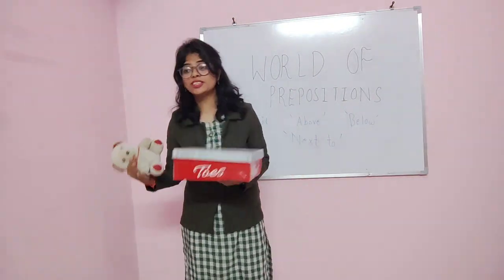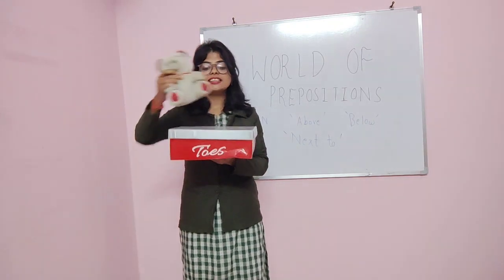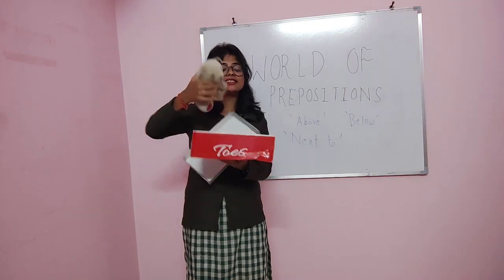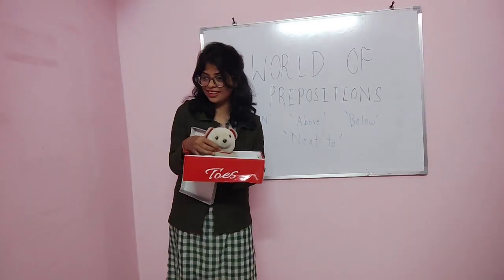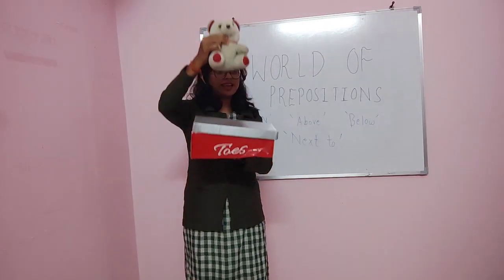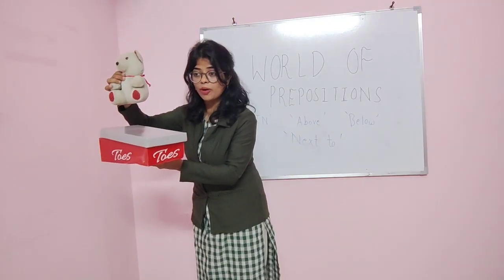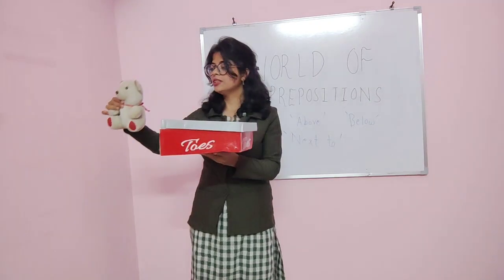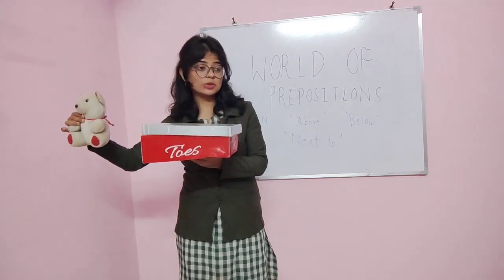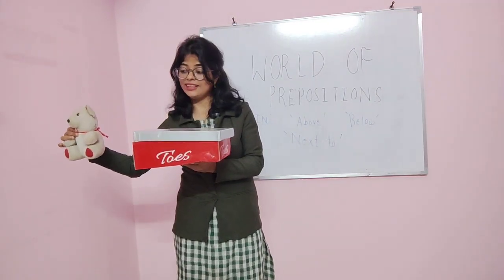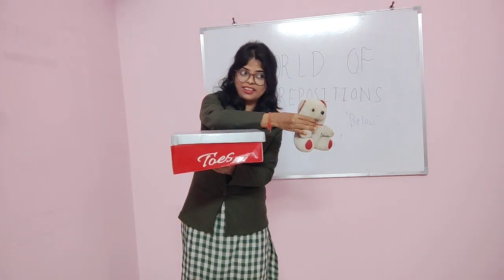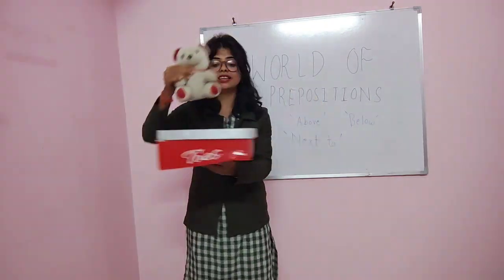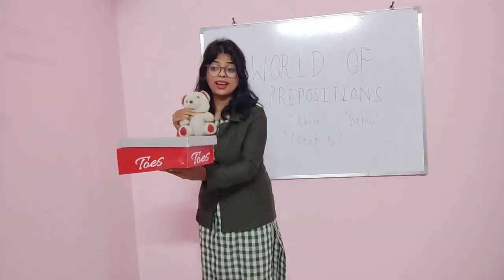So let's repeat the positions once again. Teddy is on the box. Now teddy is in the box. Now the teddy is above the box. And now the teddy is below the box. Now the teddy is next to the box on the right. The teddy is next to the box on the left. Now the teddy is in front of the box. And now the teddy is behind the box.